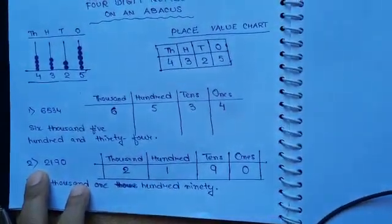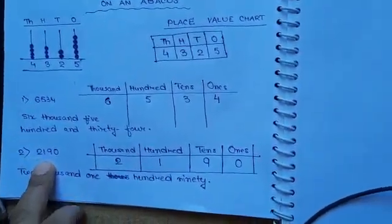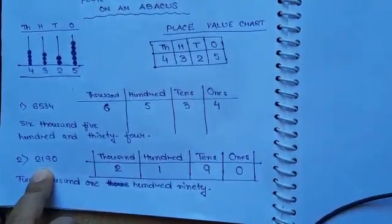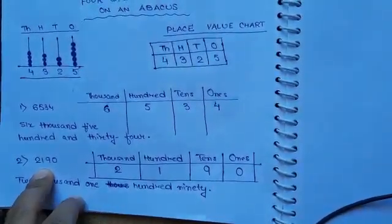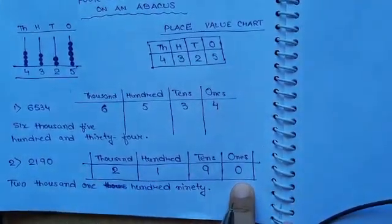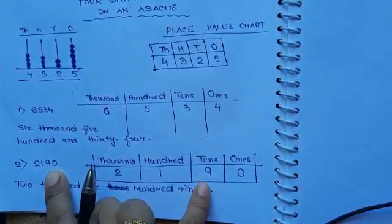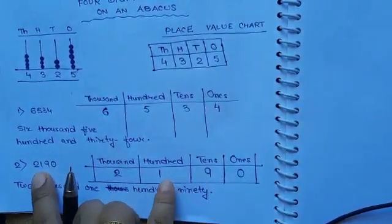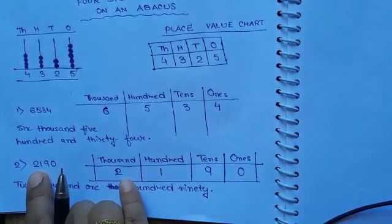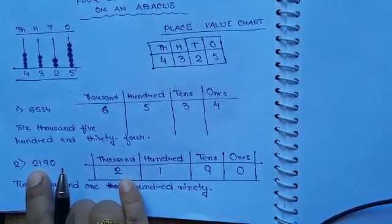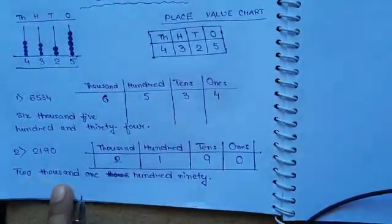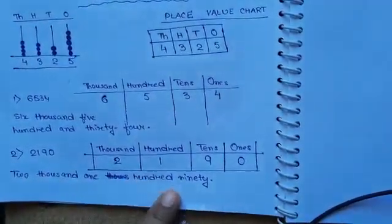Example 2: The number is 2,190. Take out 0, keep it in ones place. 9 in tens place. 1 in hundreds place. And 2 in thousands place. Now what will you get as the number name? 2,190 — two thousand one hundred and ninety.